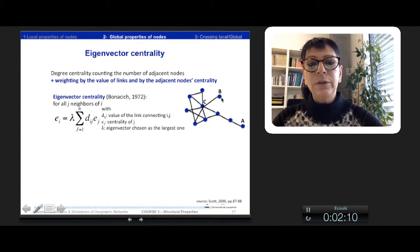In the example here, the B node does not have a high degree centrality, but as it is connected directly to C which is very connected, it has a very high eigenvector centrality.